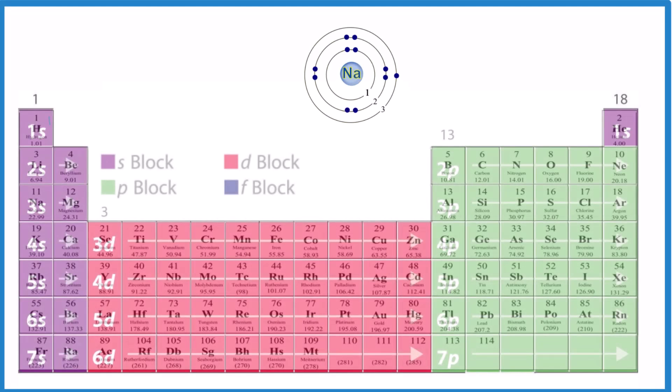In chemistry you need to understand the trend for valence electrons — how to find them for each element — and you need to understand about electron configurations. Those are related and we're going to take a look at that. First, the trend for valence electrons on the periodic table.